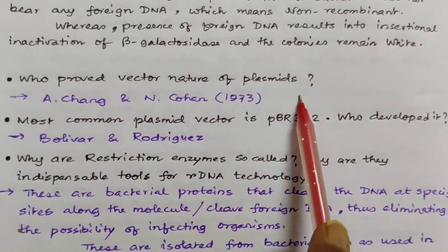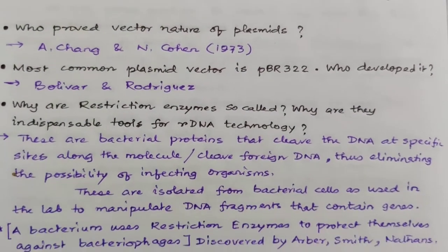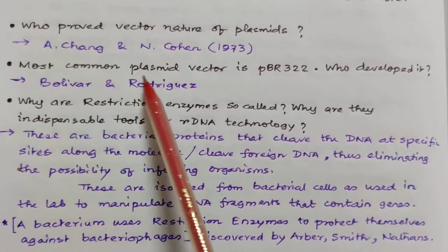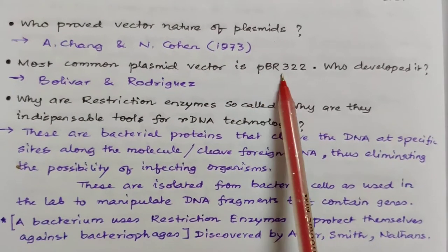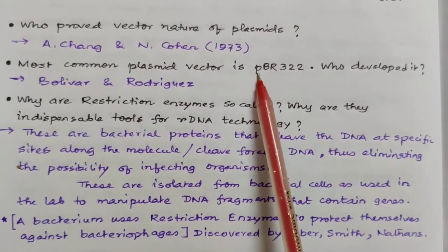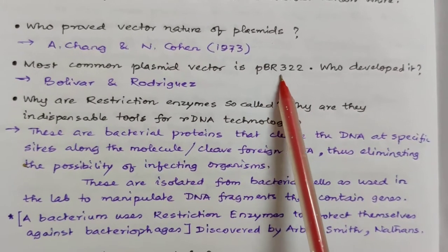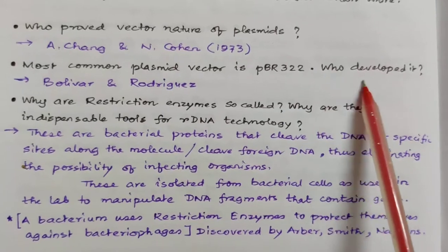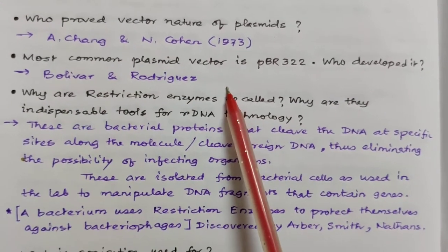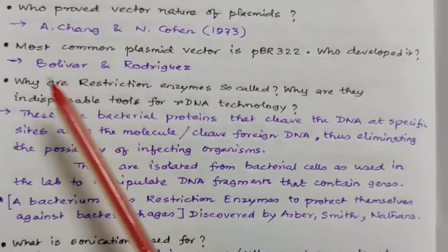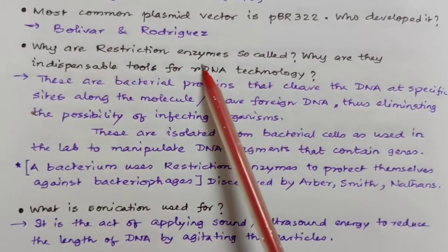White colonies contain recombinant plasmid, so the answer is option D. Who proved the vector nature of plasmids? It was Chang and Cohen. The most common plasmid vector is pBR322 — 'p' means plasmid, 'B' stands for Bolivar, and 'R' stands for Rodriguez.